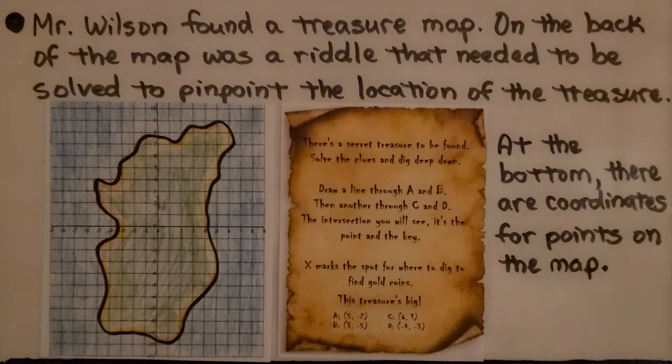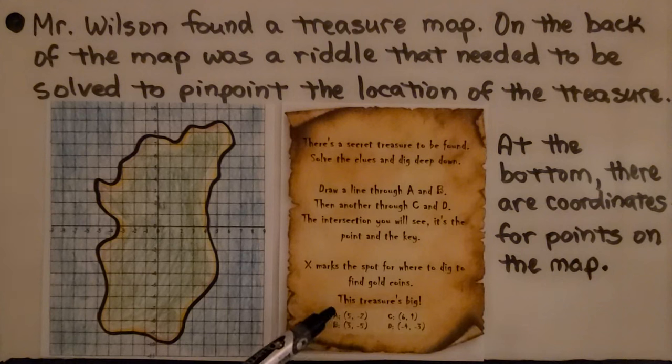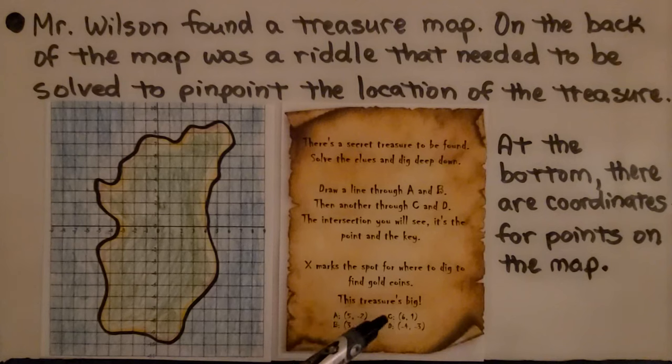At the bottom, there are coordinates for points on the map. Here's the riddle. There's a secret treasure to be found. Solve the clues and dig deep down. Draw a line through A and B, then another through C and D. The intersection, you will see, it's the point and the key. X marks the spot for where to dig. To find gold coins, this treasure's big. And it's showing ordered pairs for point A, B, C, and D.